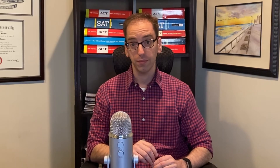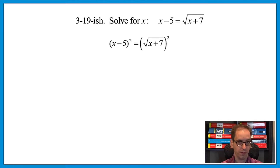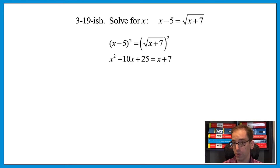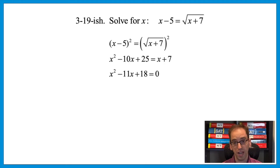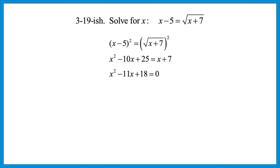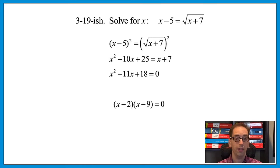Now let's kick it up a notch — a harder version, cousin of section 3 question 19. The first step is to get rid of the radical by squaring each side. Be careful: you can't just say x² and 5² — you have to FOIL, giving x² − 10x + 25. Squaring the right side makes the radical disappear. Moving everything to the left gives x² − 11x + 18 = 0. Now factor: what two numbers multiply to 18 and add to negative 11? Negative 2 and negative 9, giving (x − 2)(x − 9) = 0.